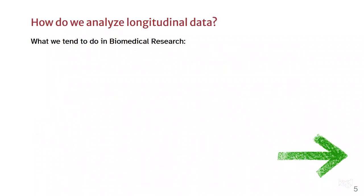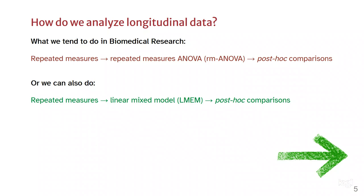How do we analyze longitudinal data? In biomedical research we tend to do the following: we do repeated measures, then we do a repeated measures ANOVA, and then we do post-hoc comparisons. Or a linear mixed model can be done as well, followed by post-hoc comparisons.